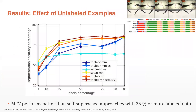To evaluate the effect of unlabeled examples in semi-supervised learning, we increase the percentage of labeled demonstrations in the training set from one to all 62 demonstrations and use the remaining demonstrations as unlabeled data. We observe that Motion-to-Vec performs better than competing self-supervised approaches with 25% or more labeled data. These results suggest that time-driven self-supervised approaches can leverage a small set of labeled examples to semantically align the embedding space.